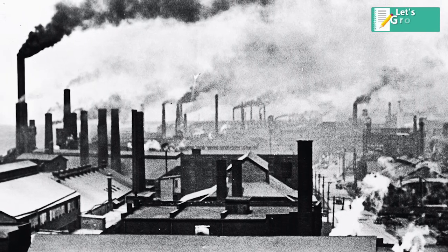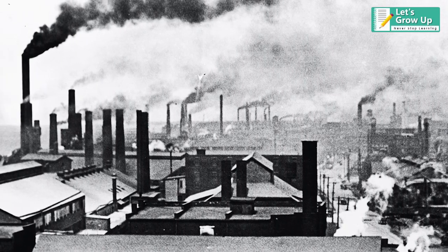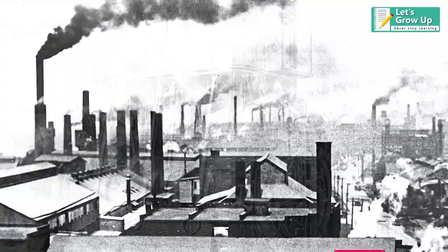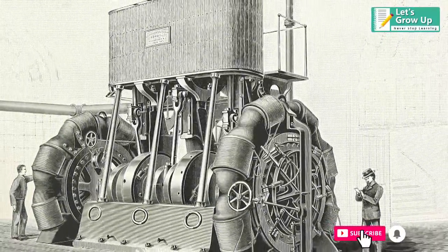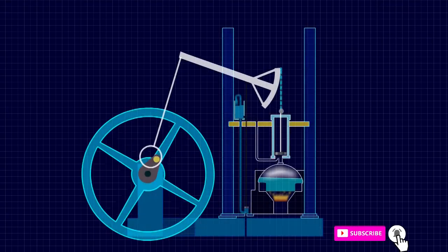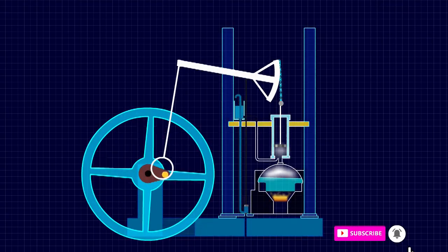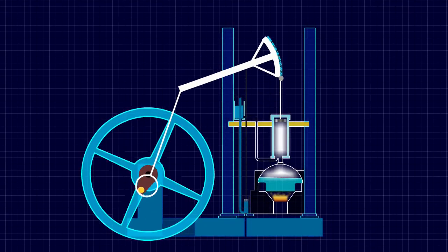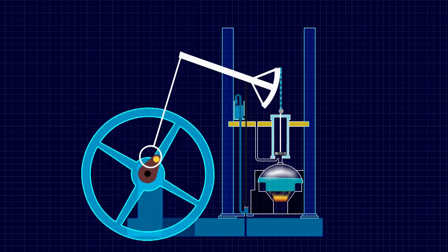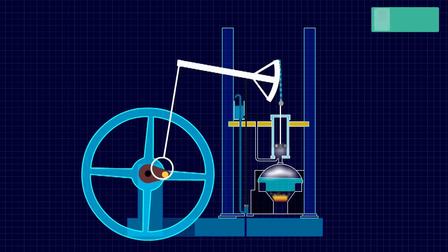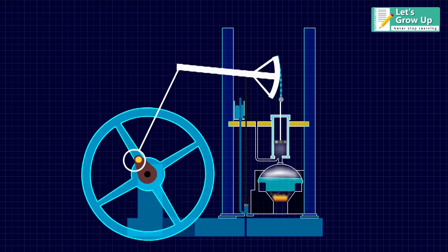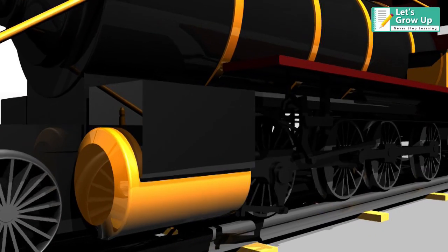One of the most important inventions during the Industrial Revolution was the steam engine. The initial design of the steam engine was changed over time, as more additions were made to enhance its quality and performance. The best example of the application of the steam engine can be found in the steam-powered locomotive.